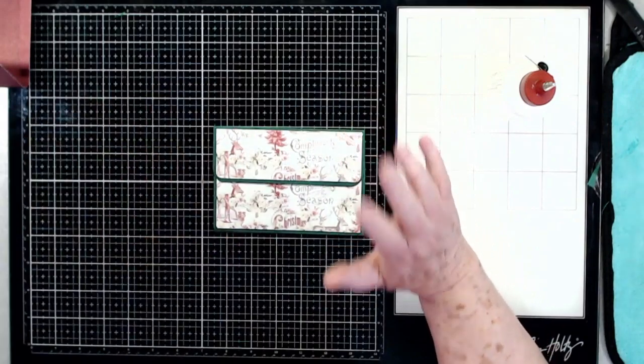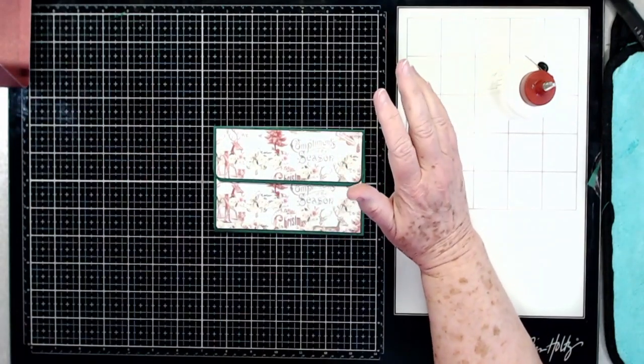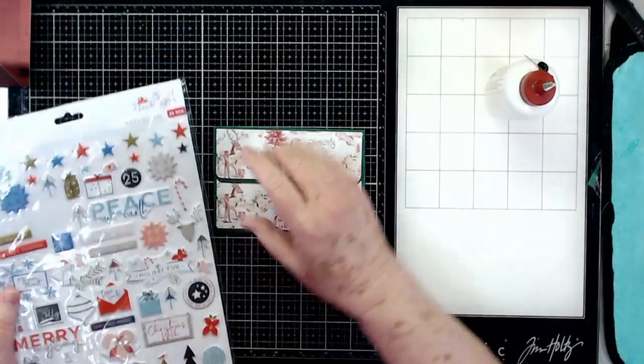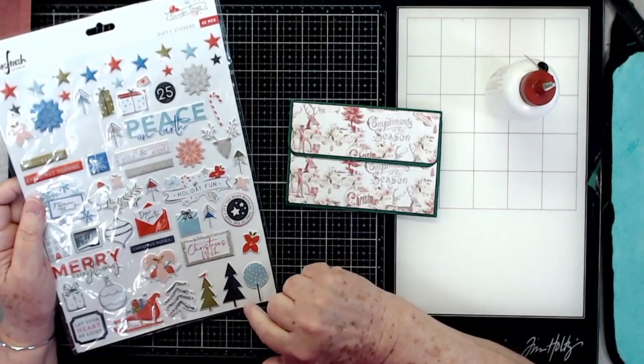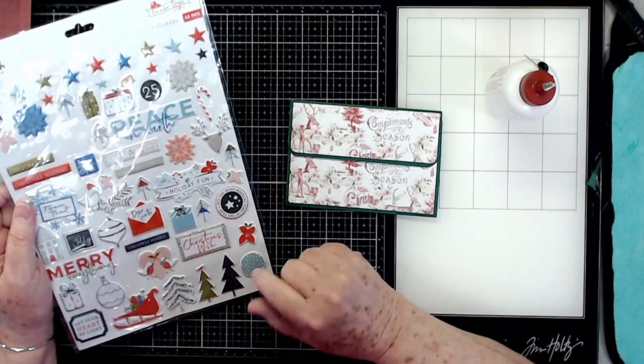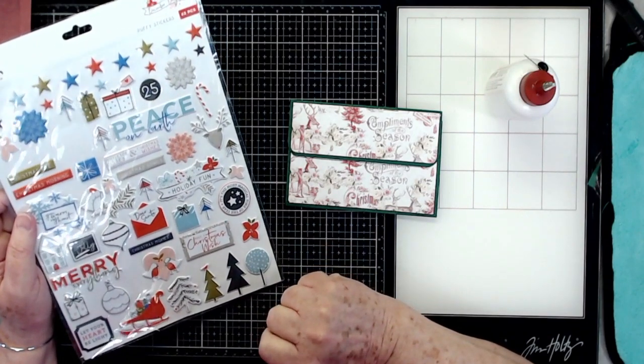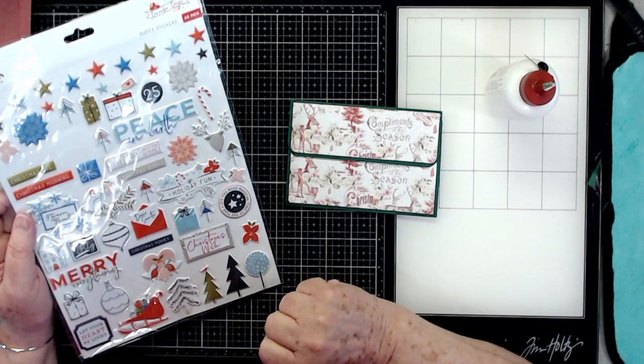Now you can put a ribbon around this, you can decorate this up lots and lots of different ways. I think I'm going to go back to our puffy stickers - I think they're really cute - and I'm going to put one of those on there, just don't know which one yet.